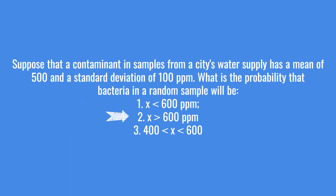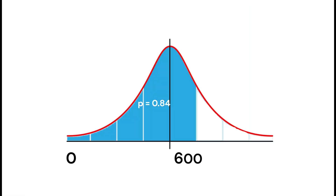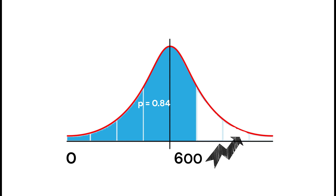The second part of the question is asking us what is the probability the bacteria count will be more than 600. I am going to show you a quick sketch I did earlier. This blue area is the probability of up to 600 — that is what we just calculated. What we are interested in is this white area. Since the total area under the curve is always 1, all we have to do is subtract this blue area from 1.